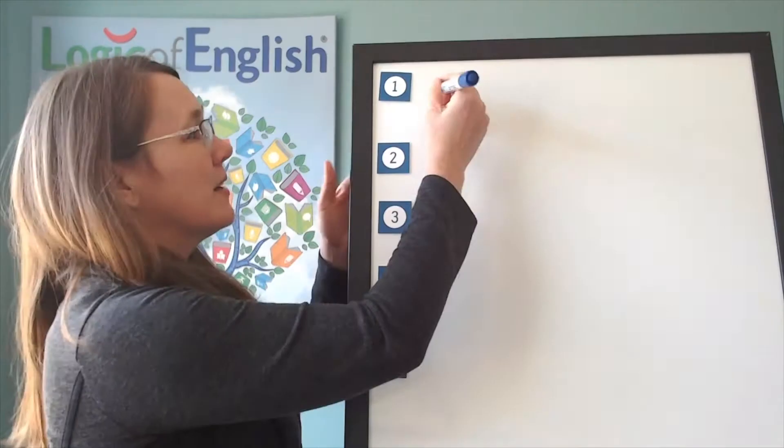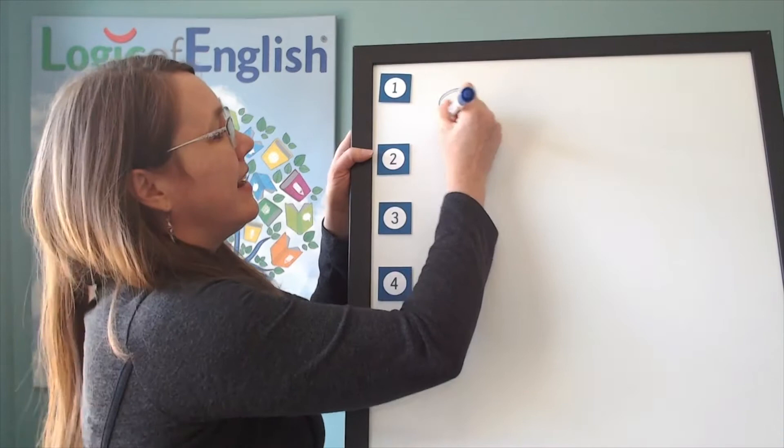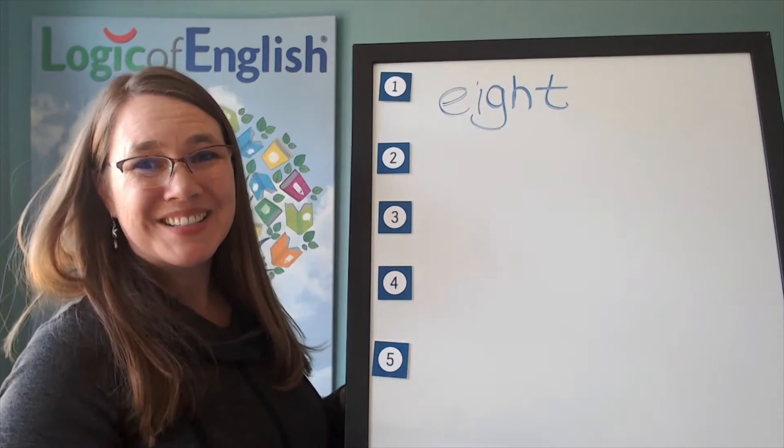Now help me to write it. A-T. And how will we mark eight? You're right, we'll underline the A. Let's sound it out. A-T. Eight.